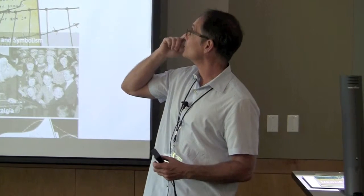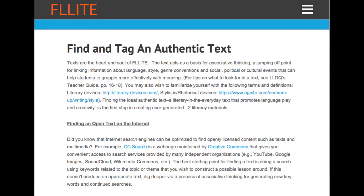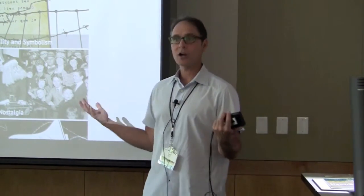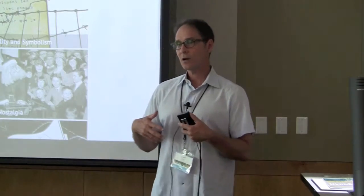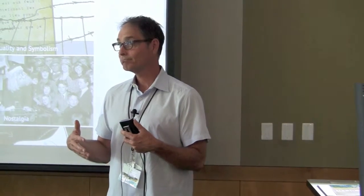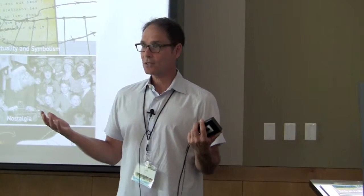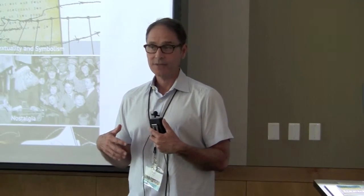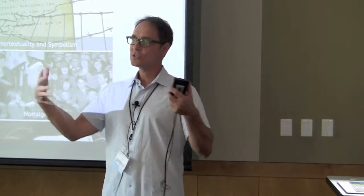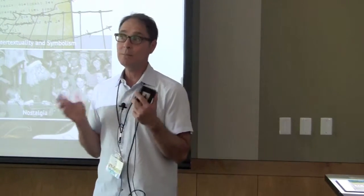We're going to start with finding and tagging a text — tagging it for metadata. The big idea is that we're creating an archive. All of you can create lessons and put them in an archive, but repositories can get full of junk. Openness sounds great, but it has to be curated. We're borrowing from academic peer review conventions as well as crowdsource conventions, building a hybrid. So we need metadata.